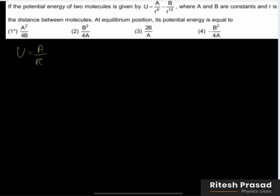So the question gives potential energy U equals A by r to the power 6 minus B by r to the power 12. We need potential energy at equilibrium position. At equilibrium position, force equals zero. So force comes from calculating minus dU by dr.